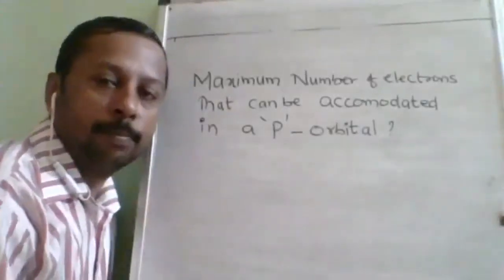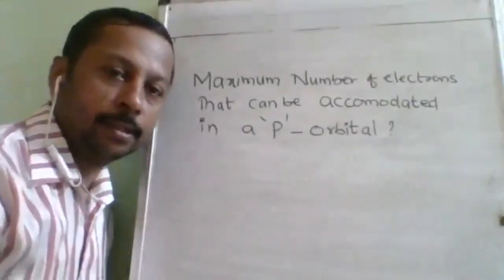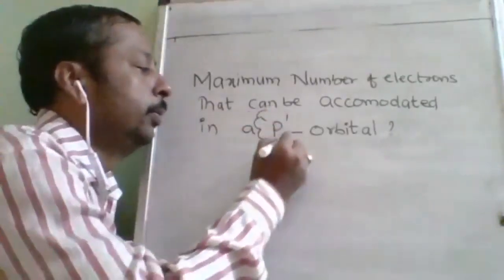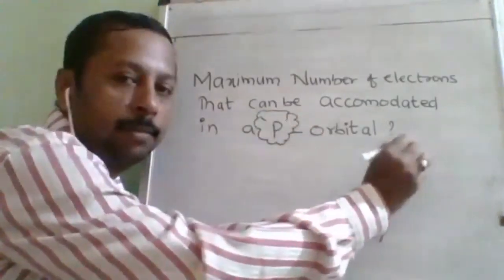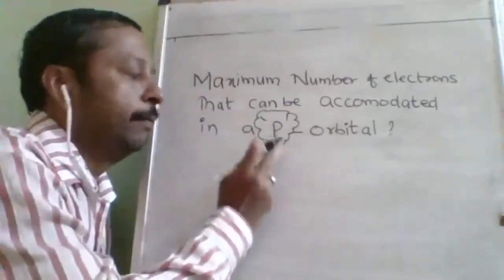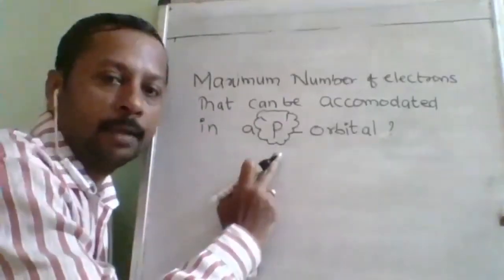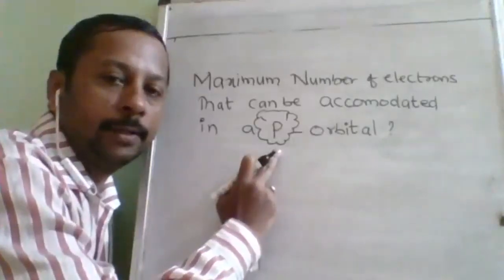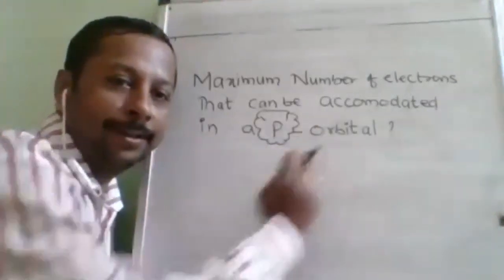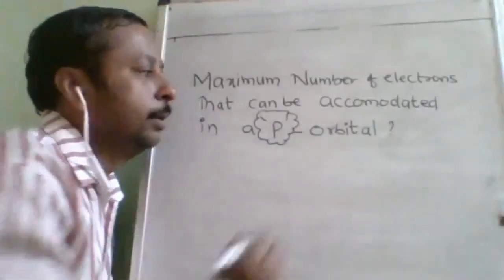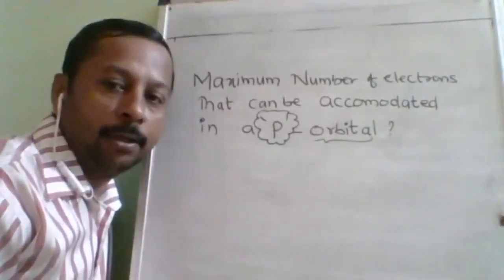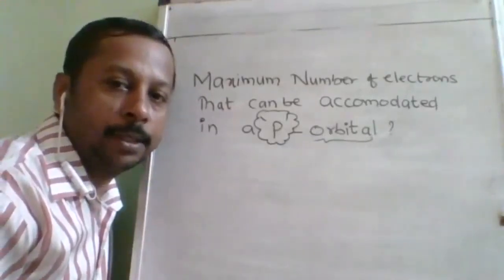You are stuck here — you should reach the maximum level, then only your answer will be correct. Every average student stops here itself, feeling that the question ends here. But the question is not here — do you understand? There is a small, minute difference between p orbital and p sub shell.